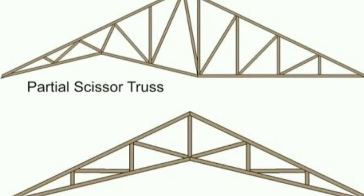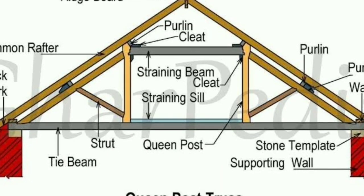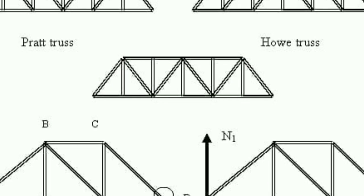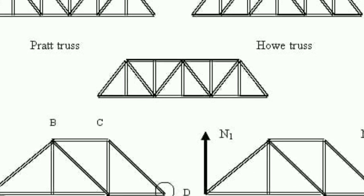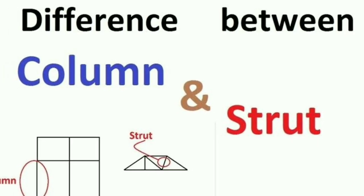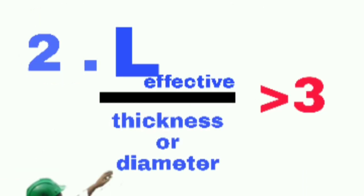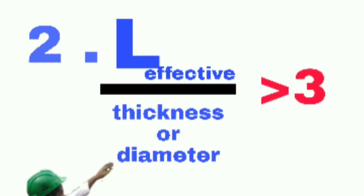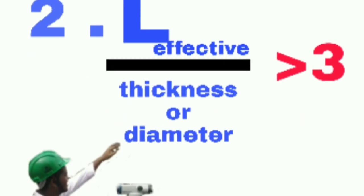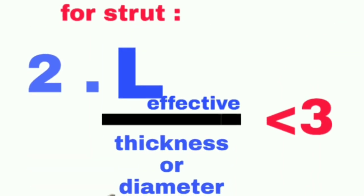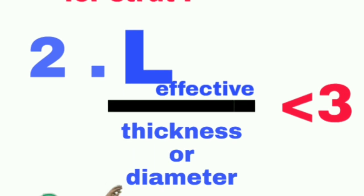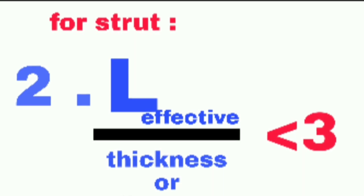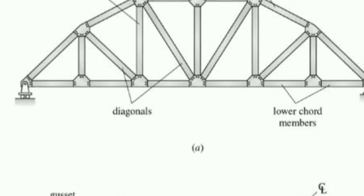Now the size of the structure — the classification of a column. Length effect divided by thickness or diameter: if this value is greater than 3, it is a long column. If the length effect divided by thickness or diameter is less than 3, that is a short column. That is the next point.